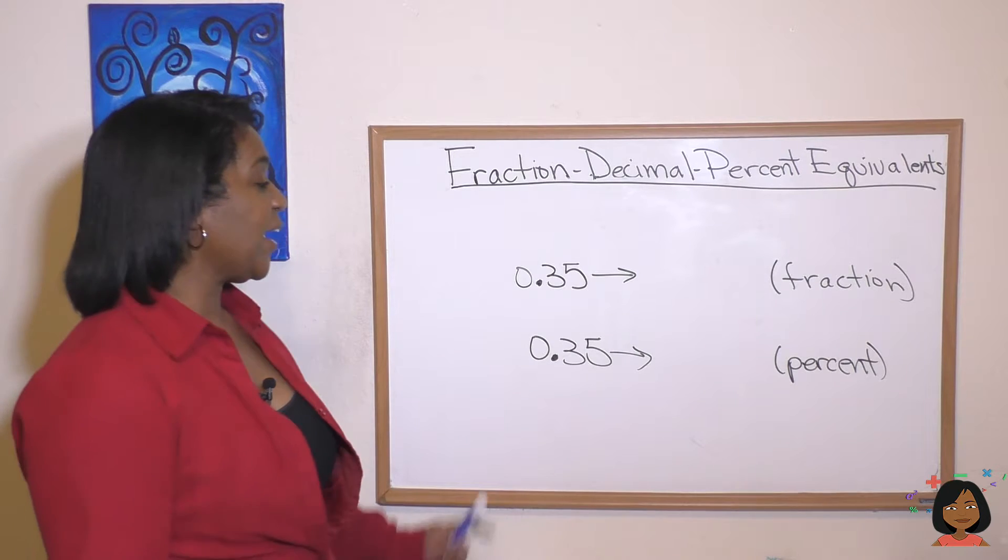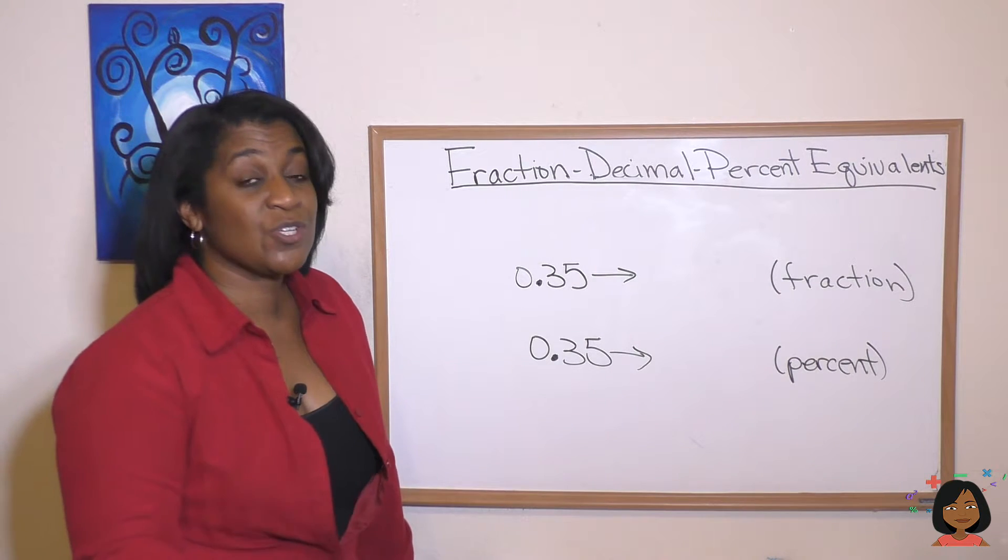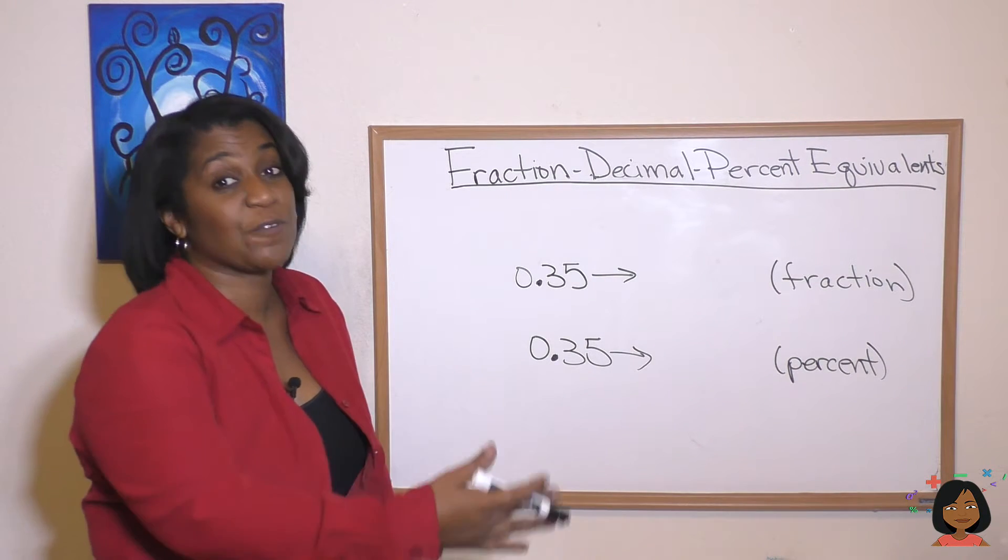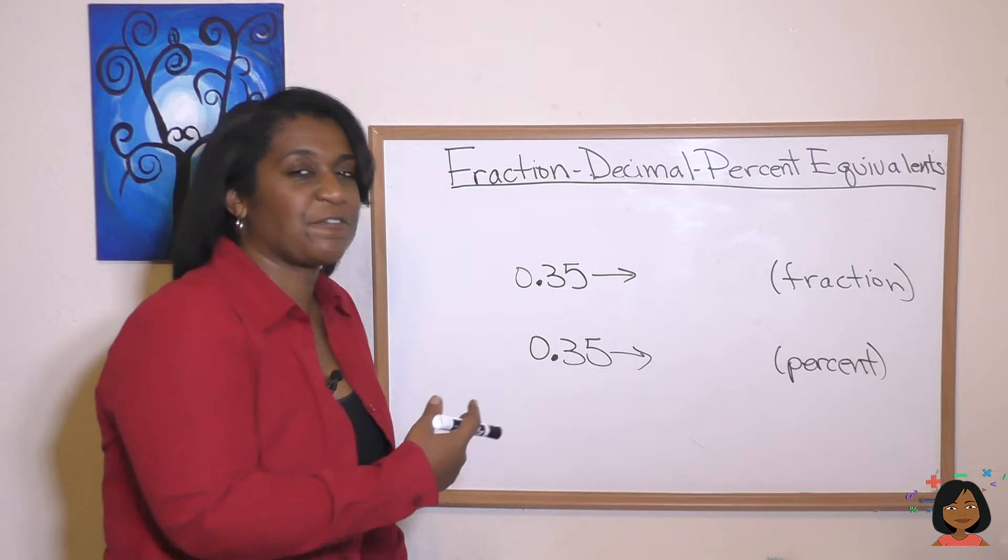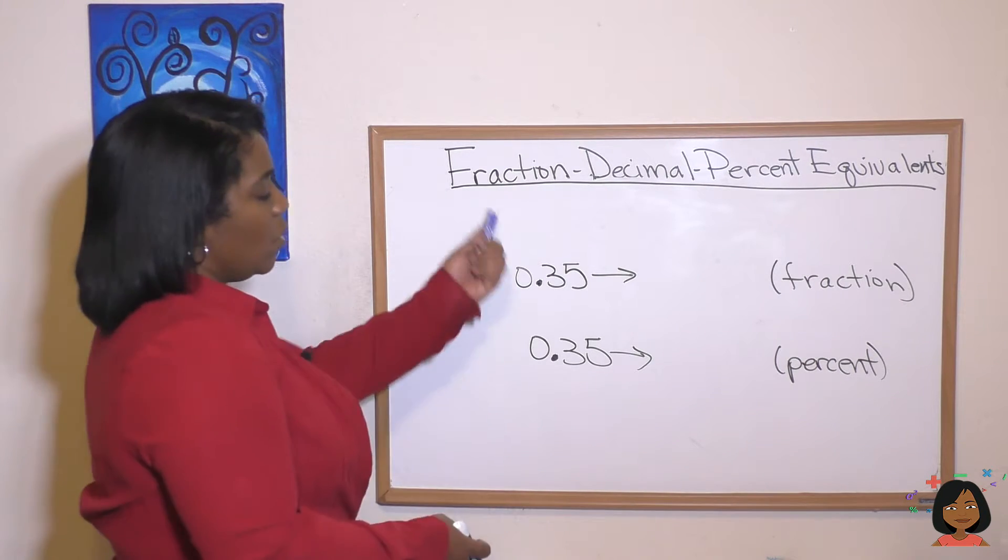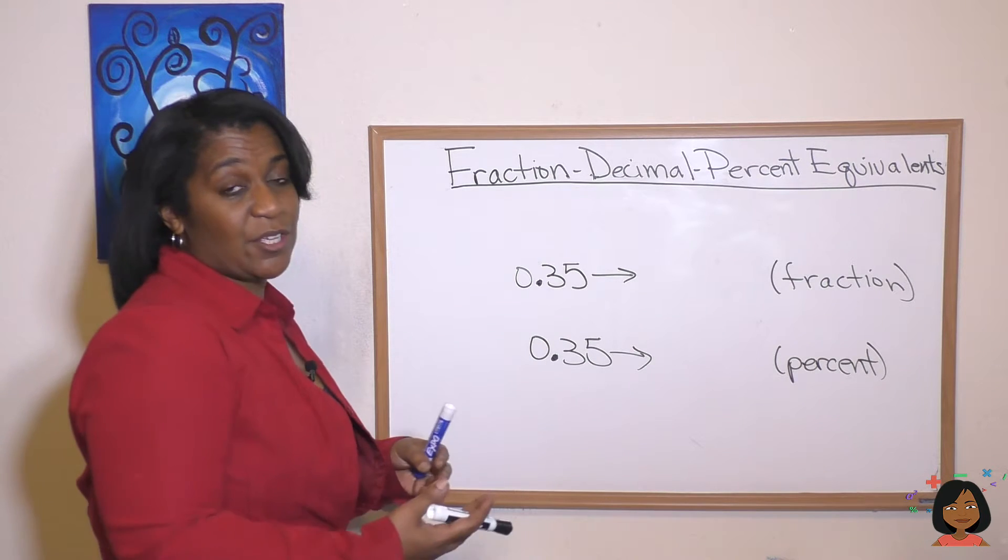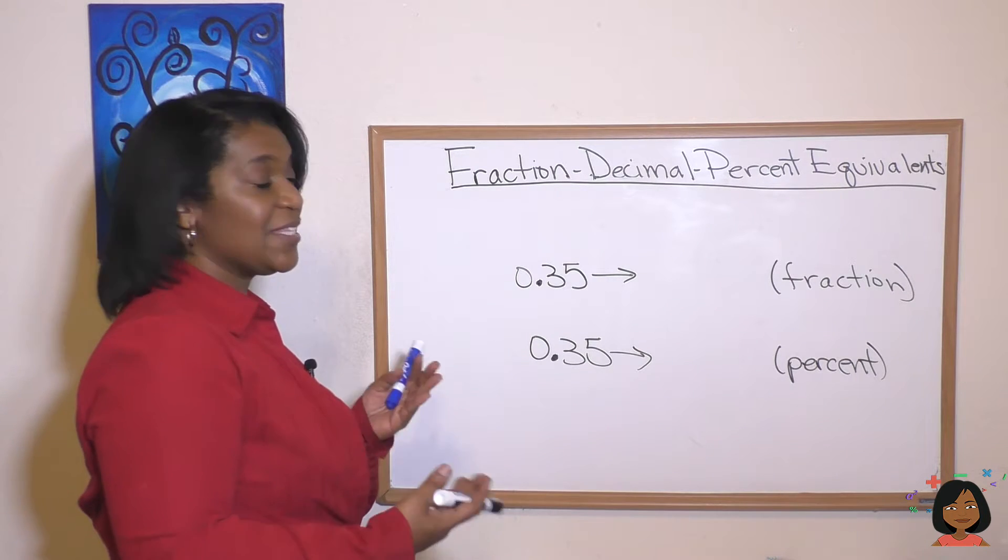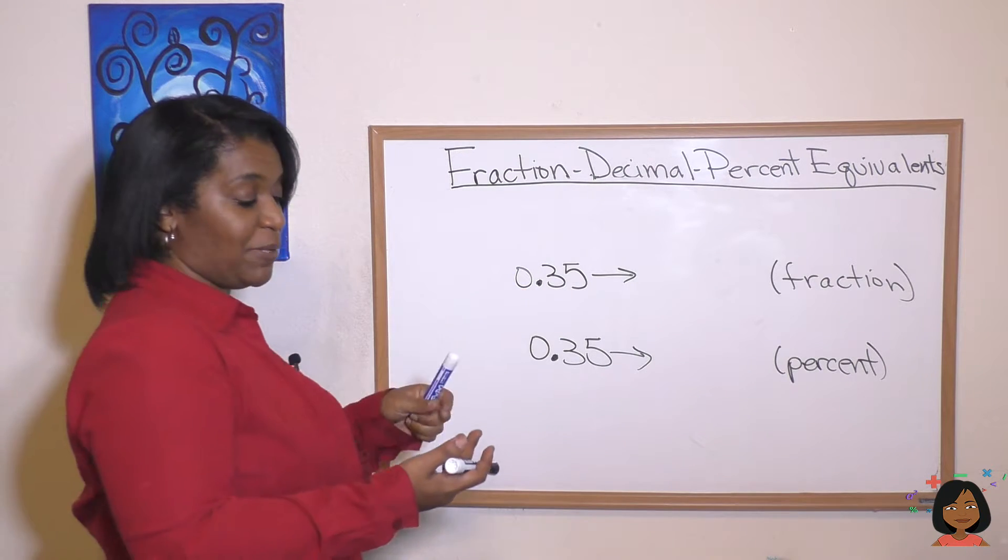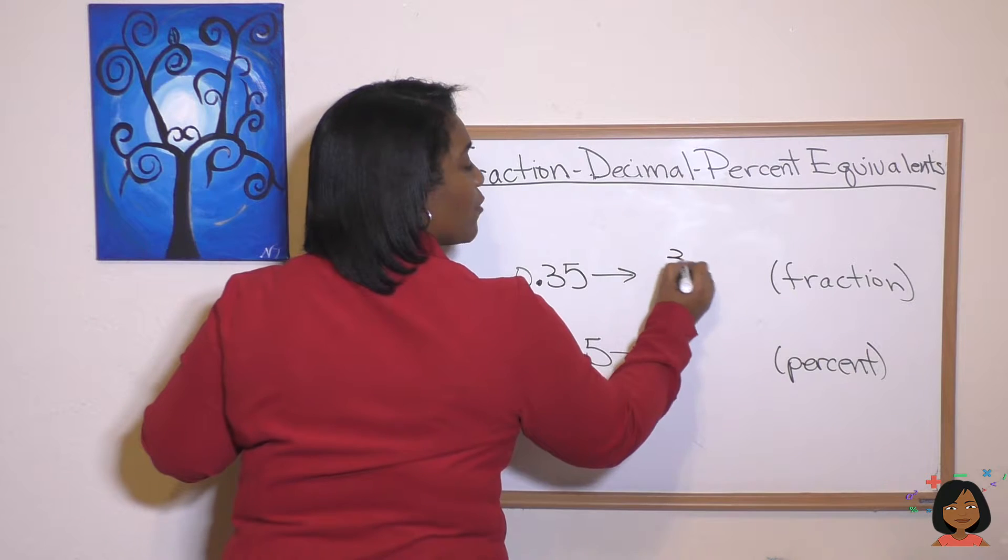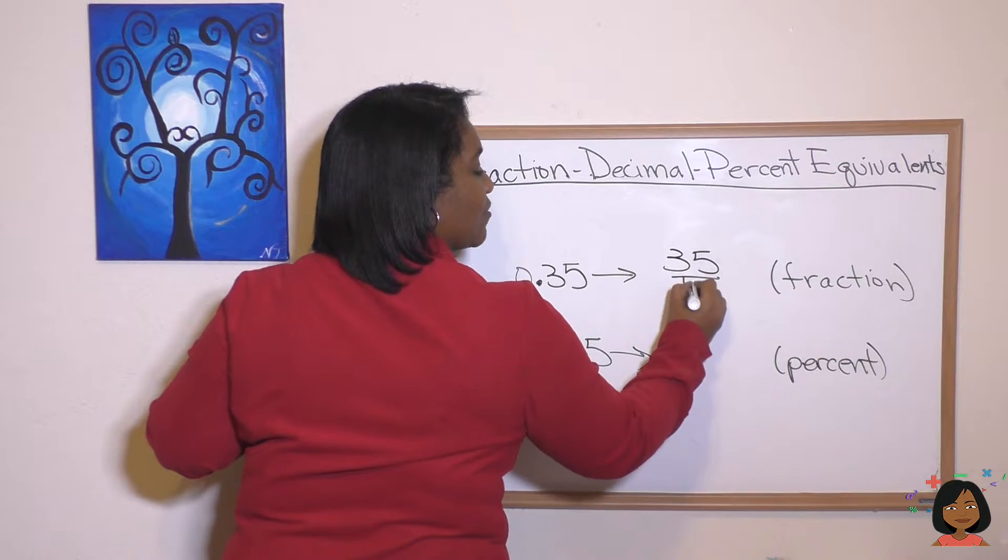Take a look this time. Here we have a decimal and we want to move it from a decimal to a fraction and from a decimal to a percent. Let's take a look at the fraction first. Well we know if we look at the place value of this decimal it tells us that it is 35 over 100. So we always just look at the place value and put it over the appropriate place value.